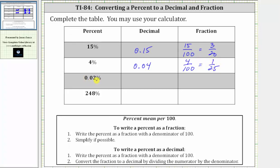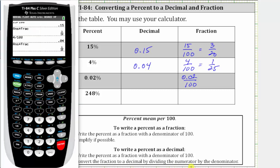Next, we have 0.02%, which to begin as a fraction is 0.02 over 100. Going back to the calculator, we enter 0.02%, 0.02 divided by 100, enter.